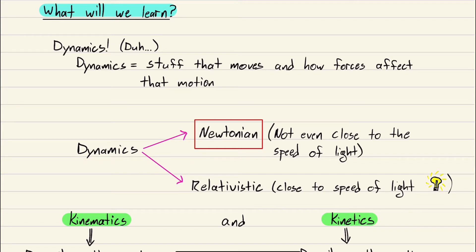Dynamics is split into two big categories: Newtonian mechanics and relativistic dynamics. Relativistic is stuff that goes close to the speed of light. Things get weird there. I don't know anything about relativity, so we're not going to touch that. We're sticking to Newtonian, not even close to the speed of light.